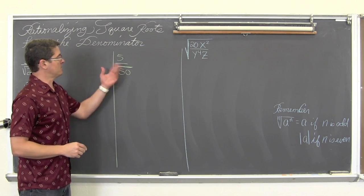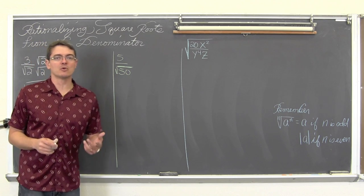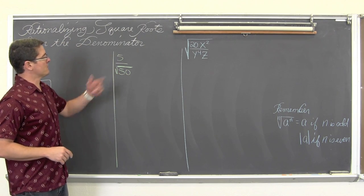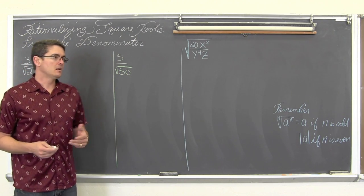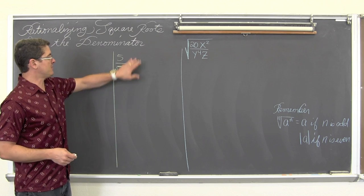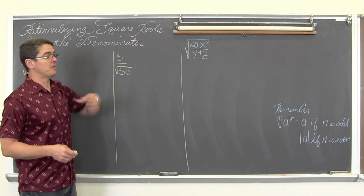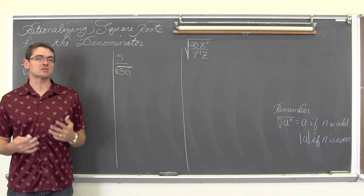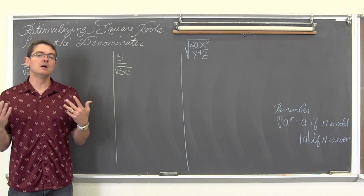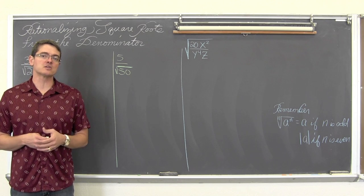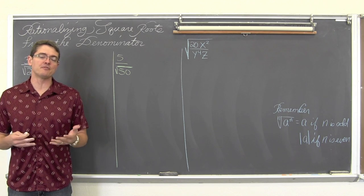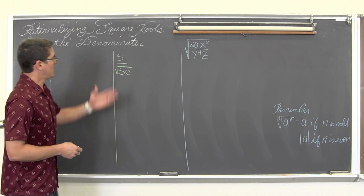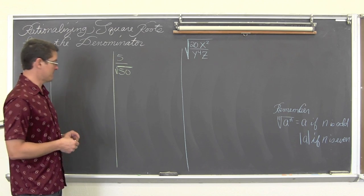Our second example, again with pure numbers, we have 5 over the square root of 50. Now I could multiply top and bottom by square root of 50, but my numbers are going to get bigger than necessary. So I am going to follow my directions, which was to simplify the numerator and denominator as much as possible first.